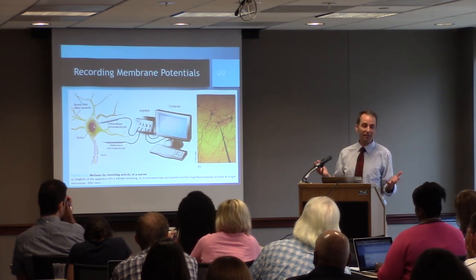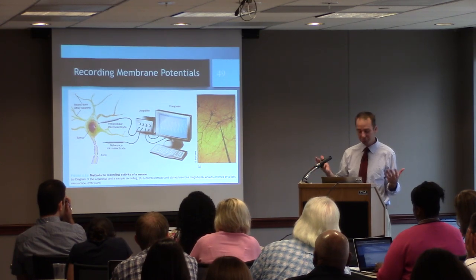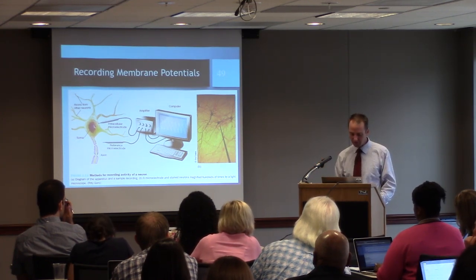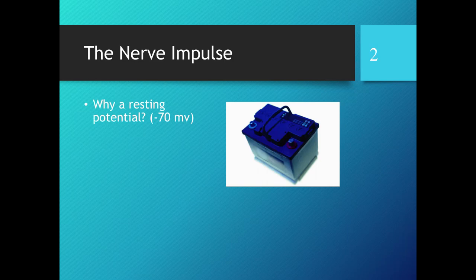The resting potential is about negative 70 millivolts — enough that you can measure it. I like to start with why neurons have a negative charge inside the membrane at rest. Does anybody want to offer an explanation for why neurons have this charge? What good does it do neurons to be charged even at rest, when they're not sending a signal? What's the function, the purpose — why is it negative?